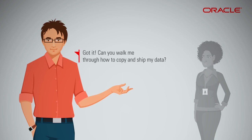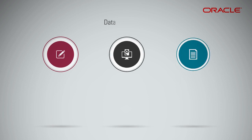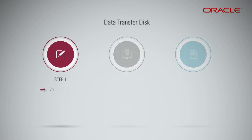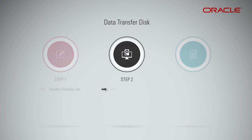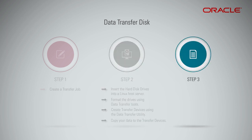Can you walk me through how to copy and ship my data? Sure. For Data Transfer Disk: Step 1 — create a transfer job using the console or the Data Transfer Utility. Step 2 — insert the hard disk drives into a Linux host server and format the drives using Data Transfer Tools. Create transfer devices using the Data Transfer Utility and copy your data to the transfer devices. Step 3 — generate a manifest for each transfer device using the Data Transfer Utility.